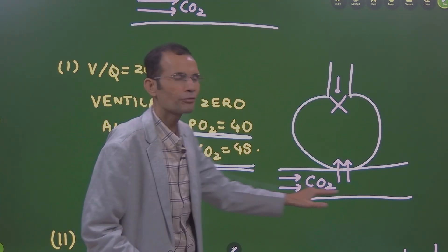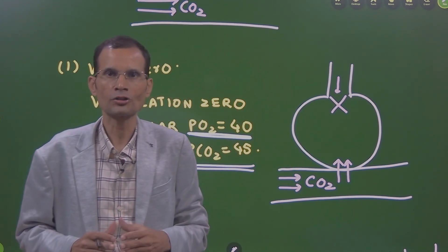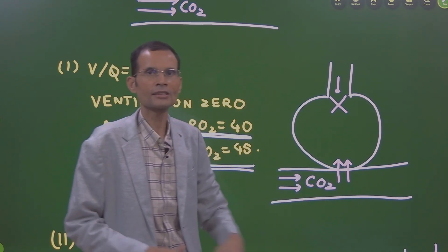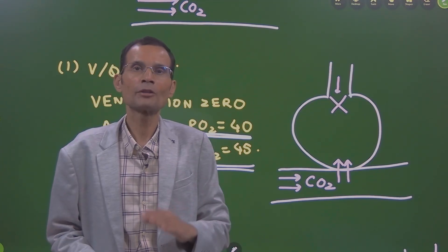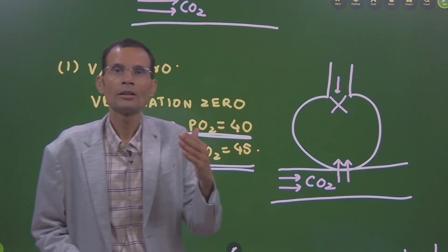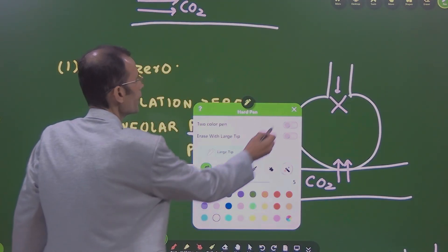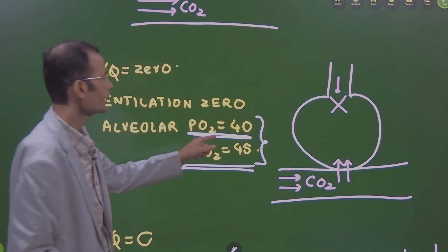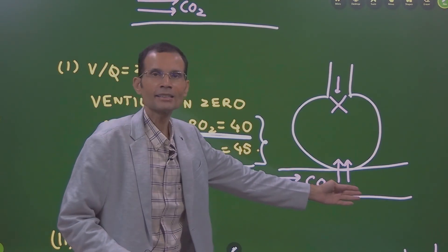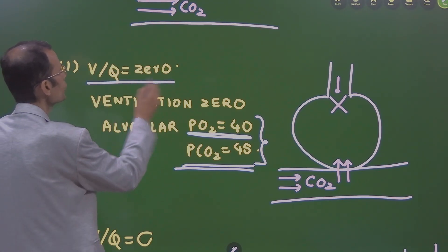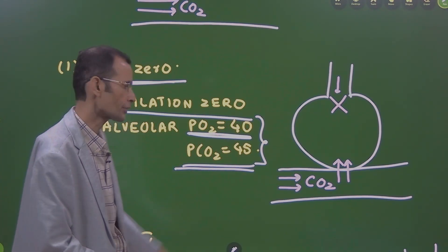One might wonder why PO2 cannot be zero. Even the venous blood carrying carbon dioxide does have some amount of oxygen, and therefore the alveolus will still have some oxygen. It is a partial pressure because it is a lesser amount, so PO2 will be low but not zero — about 40 mmHg. So PO2 = 40 and PCO2 = 45 means there is no ventilation in the alveolus but blood perfusion is happening — V/Q ratio is zero.